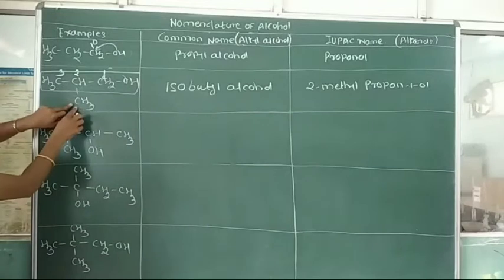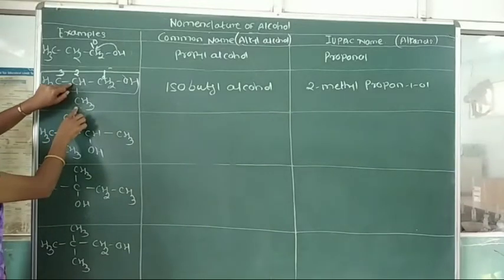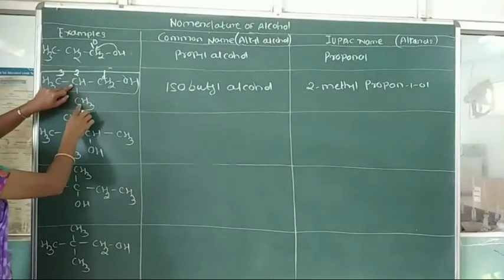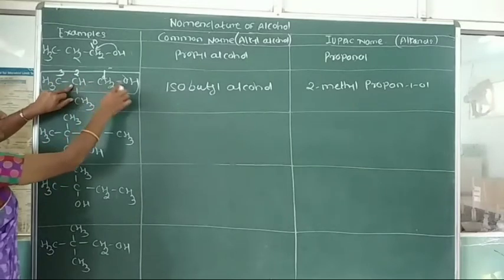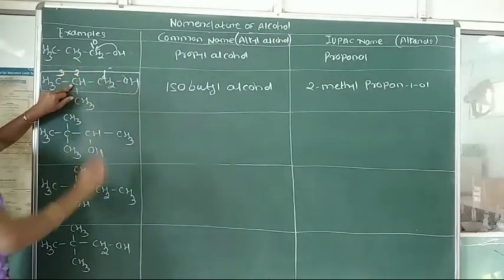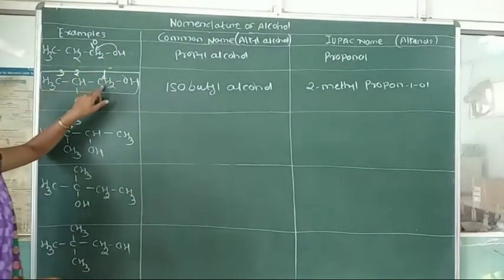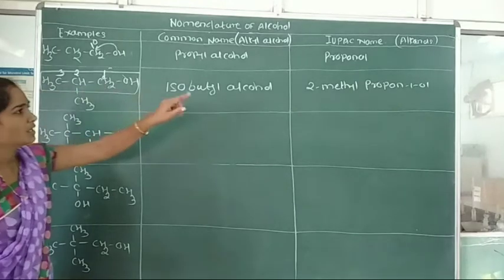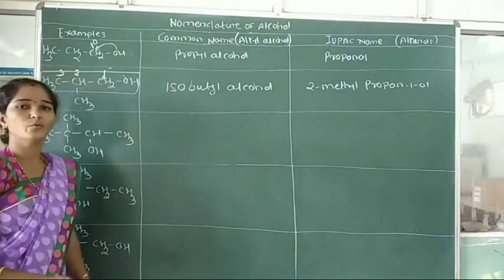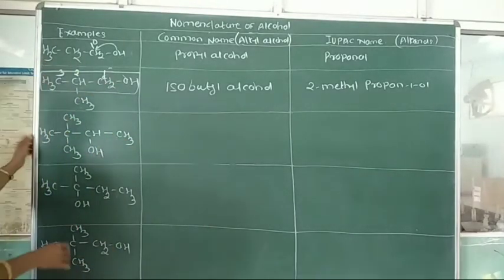The methyl group is attached to the second carbon. So we write 2-methyl, propane, and the hydroxy group is attached to the primary carbon atom, that is carbon number 1. Therefore, the IUPAC name is 2-methylpropan-1-ol.